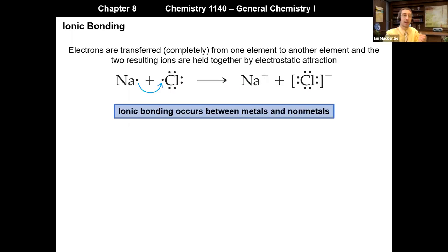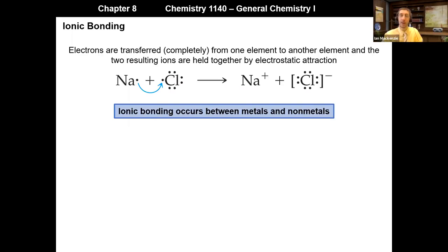Ionic bonding occurs only between metals and nonmetals, as was the case when we discussed ionic compounds.